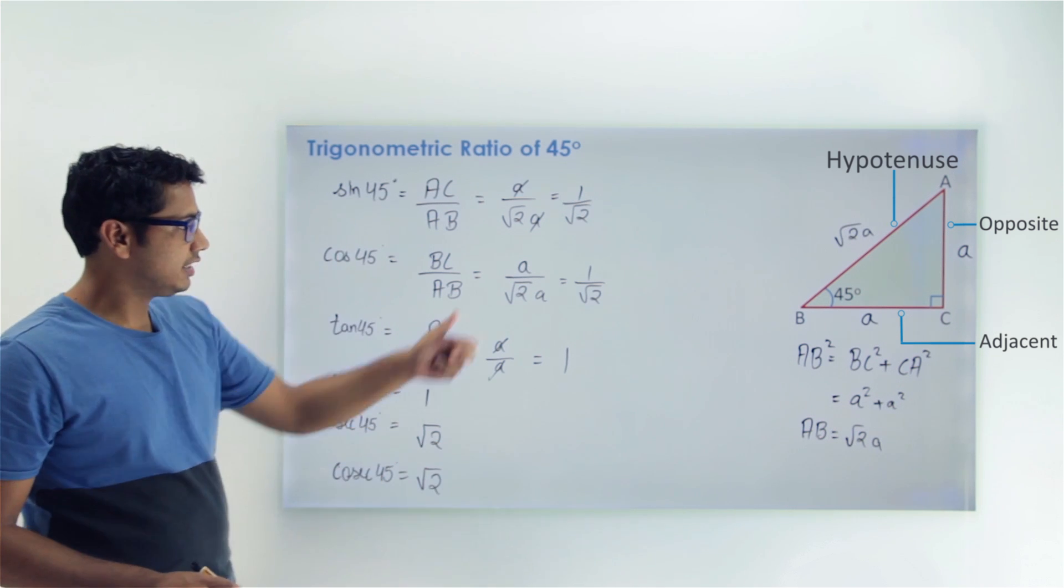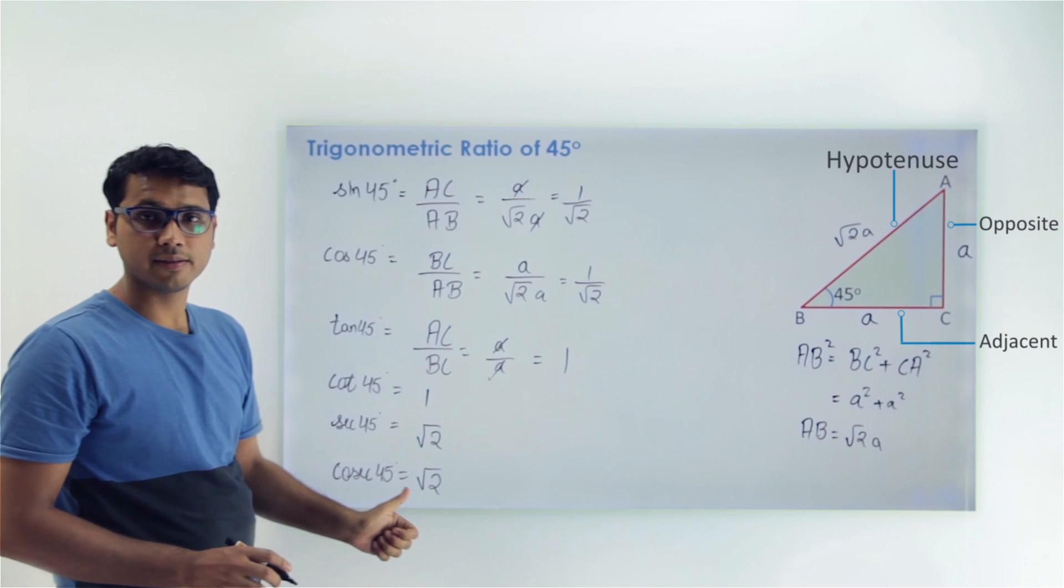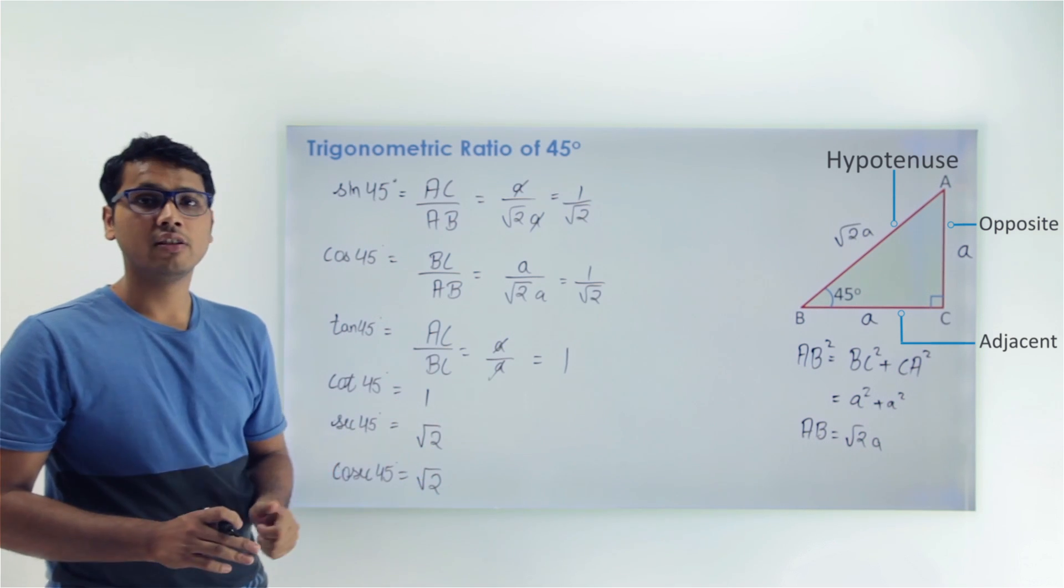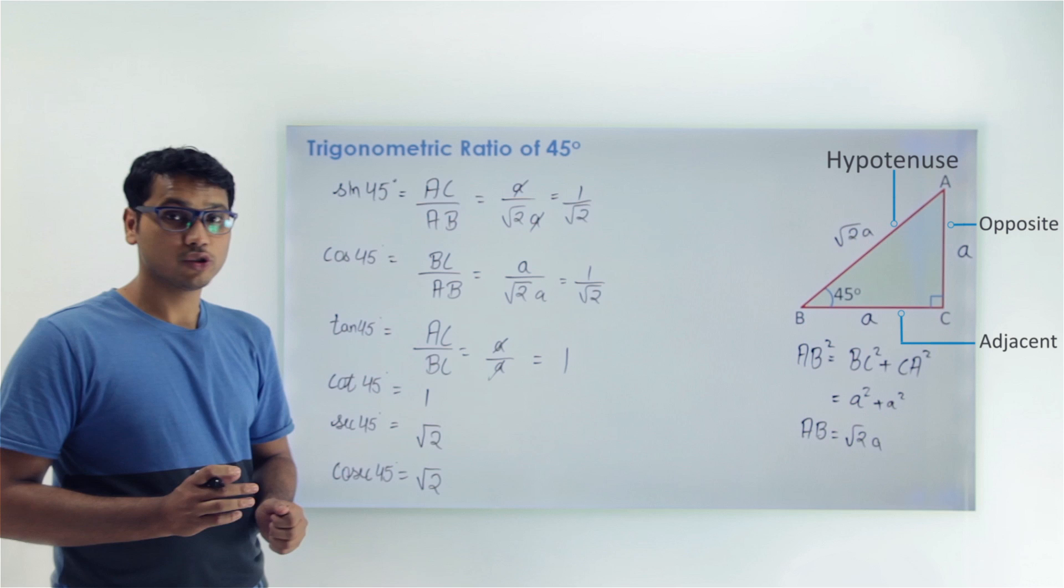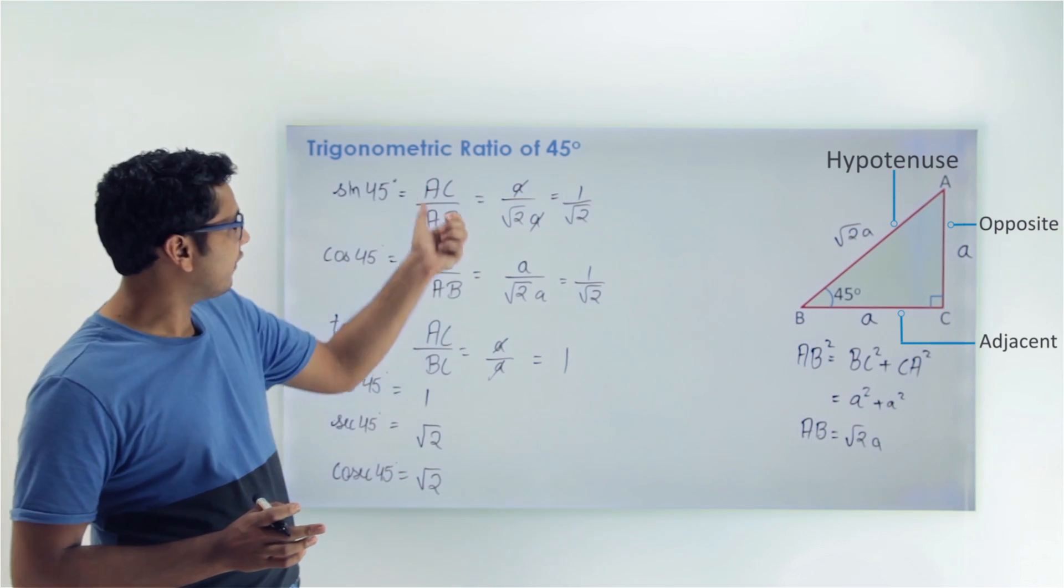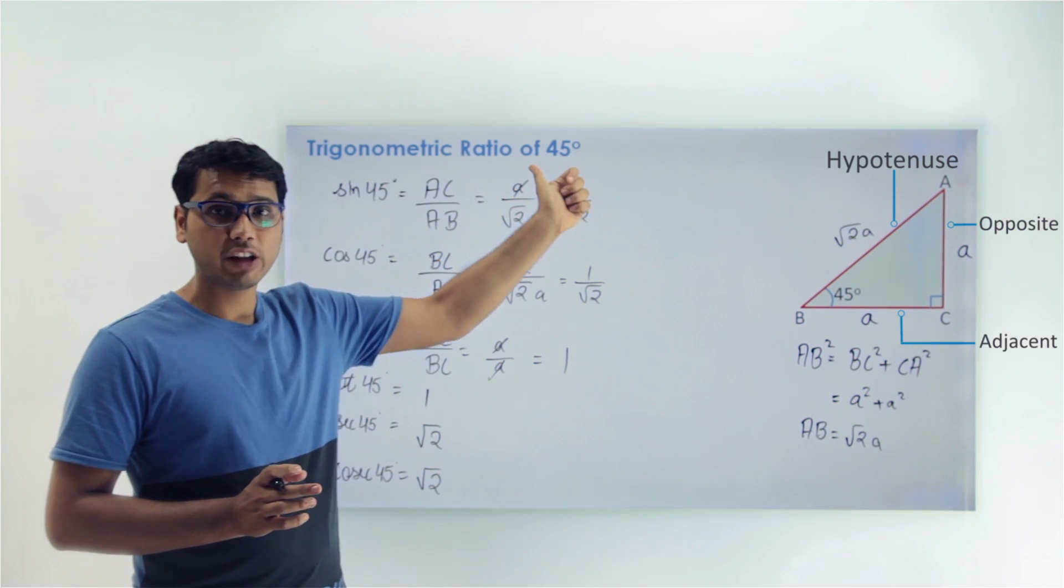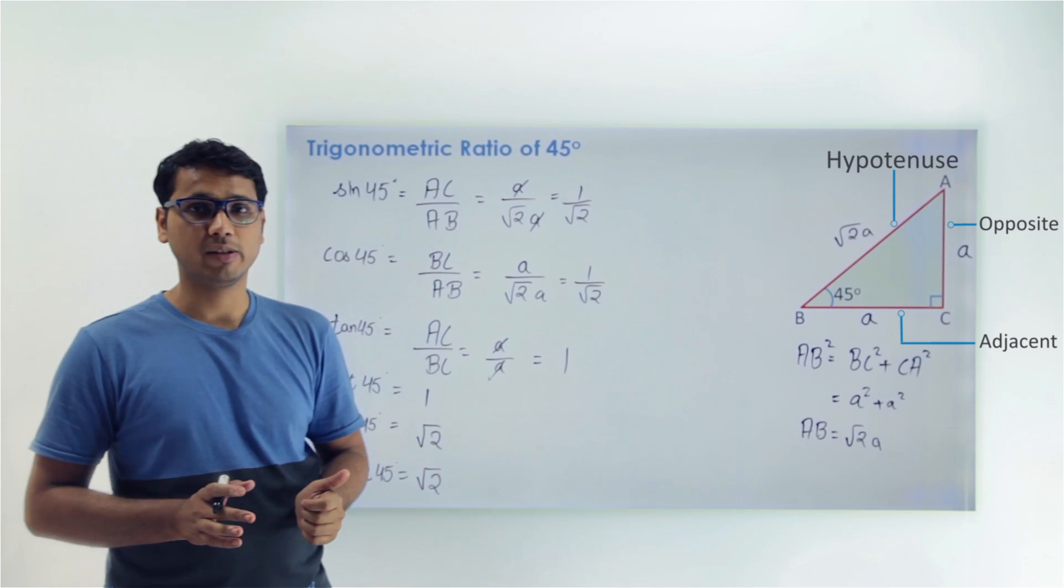Now you can see that all the values exactly match with the values in the table. So this is how we proceed for the value of angle 45 degrees for all the trigonometric ratios.